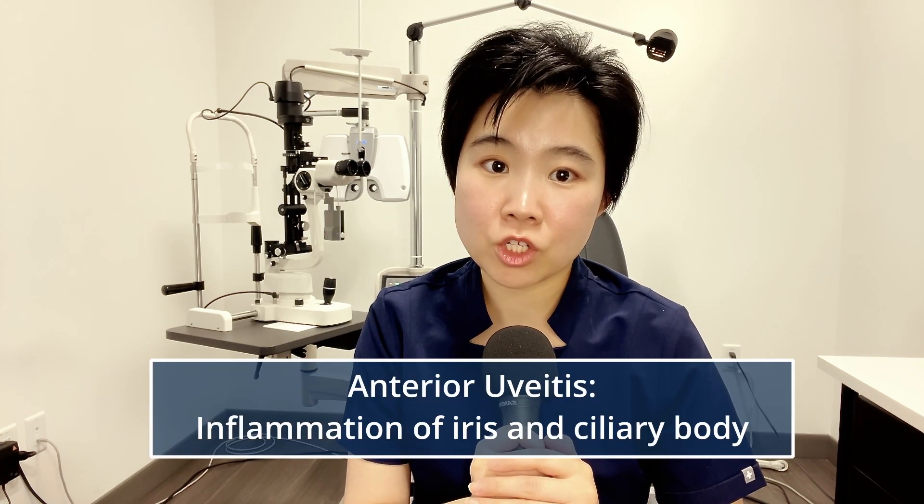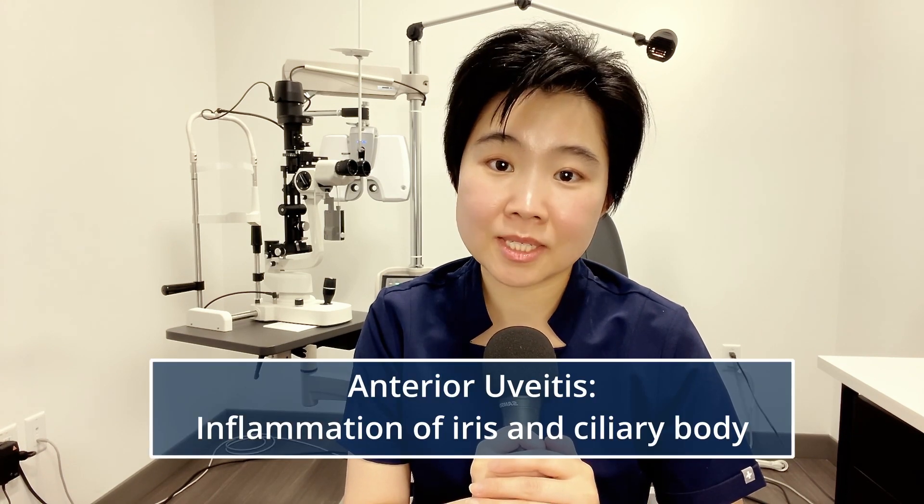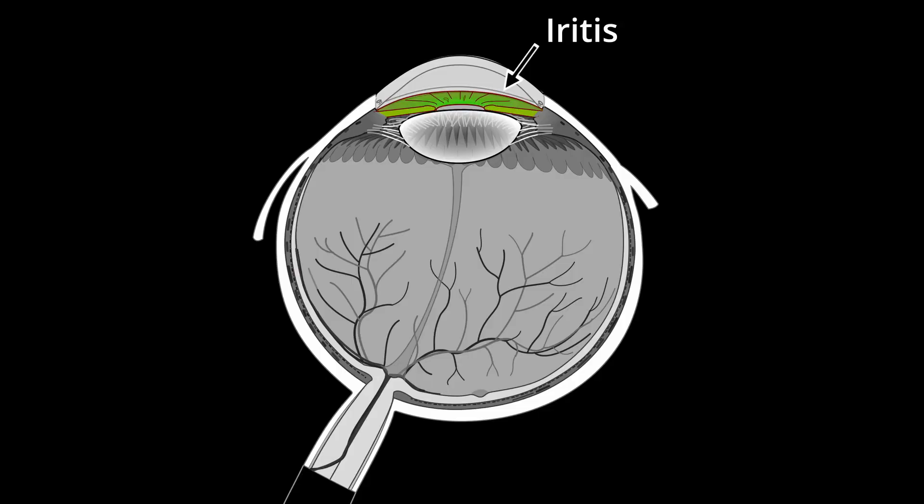All three cases are examples of anterior uveitis, also known as iritis. Anterior uveitis refers to inflammation of the iris, ciliary body, or both. For reference, the iris is the color part of the eye, while the ciliary body is situated right behind the iris.